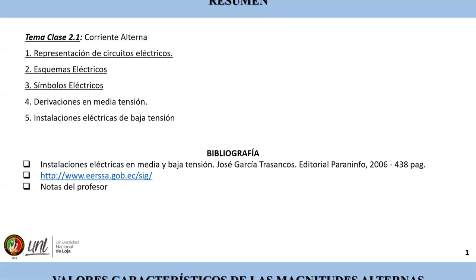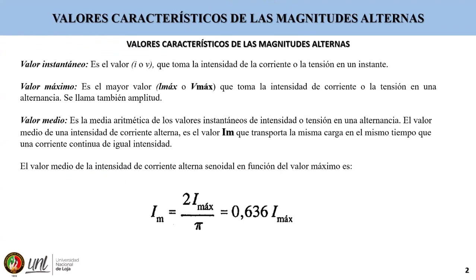Como introductorio, vamos a ver un compendio de las principales ecuaciones fundamentales de corriente alterna, donde vamos a abordar los valores característicos de las magnitudes alternas. Tenemos valor instantáneo, valor máximo, valor medio, donde el valor medio de la intensidad de corriente alterna senoidal, en función del valor máximo, va a ser igual a 2 por intensidad máxima entre pi, o de forma resumida, 0,636 por intensidad máxima.